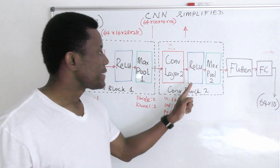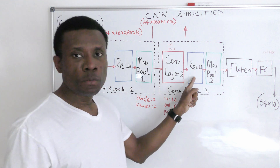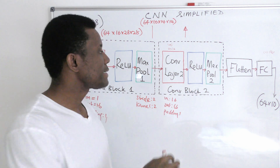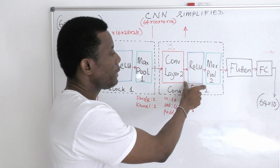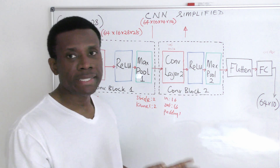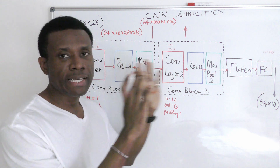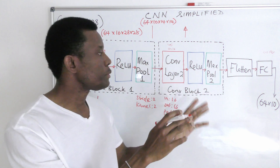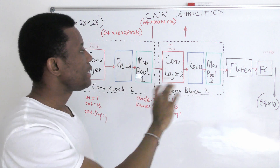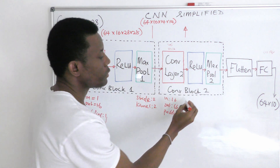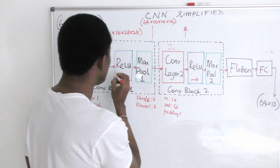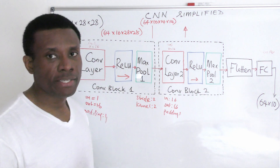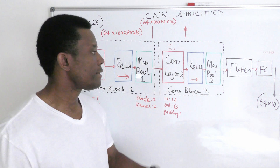Let's now move on to the second ReLU. Again, ReLU takes all the inputs, activates them, and sends them across. Nothing changes — it just passes everything through as it is.